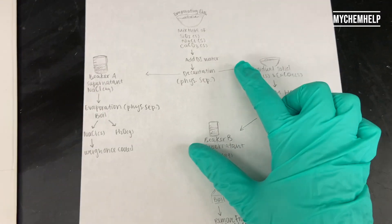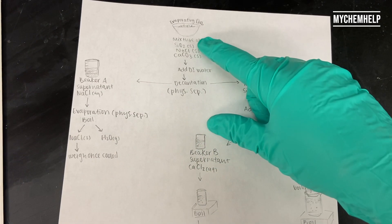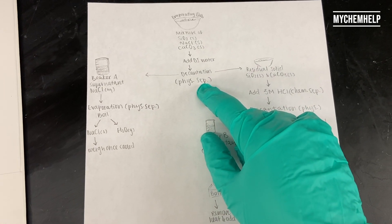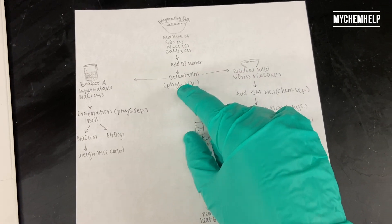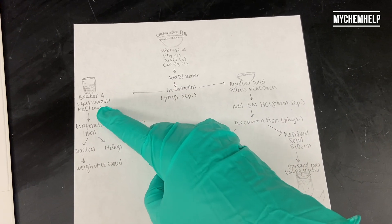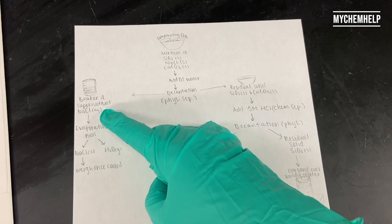So the first thing we're going to do is add some DI water to our evaporating dish. We're then going to decant, which means to pour off the liquid portion, and we're going to decant into a pre-weighed beaker, and in that beaker is going to be our aqueous sodium chloride.